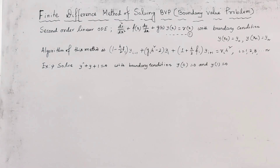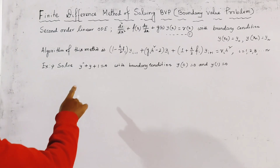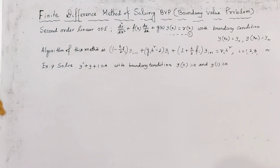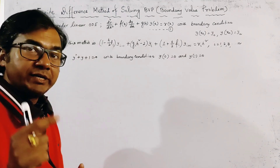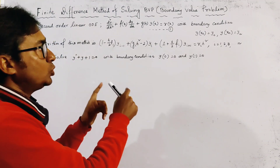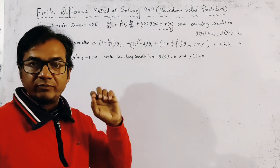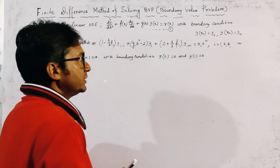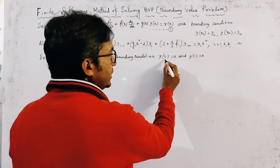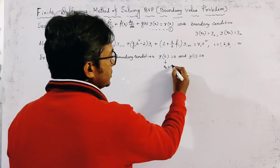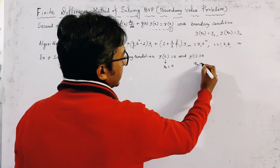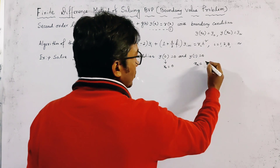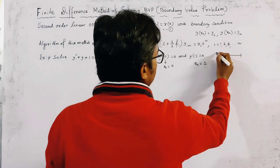In this problem, no value of the step length h is mentioned, so we can take any value of h to divide the given interval. The interval is clearly from x₀ = 0 to xₙ = 1, so our interval is 0 to 1.